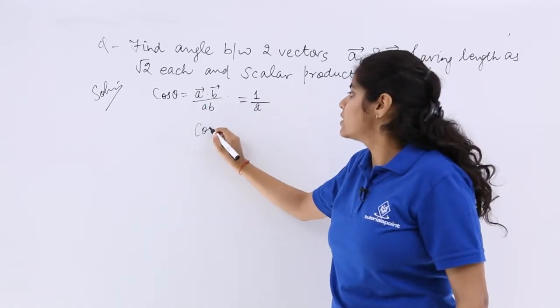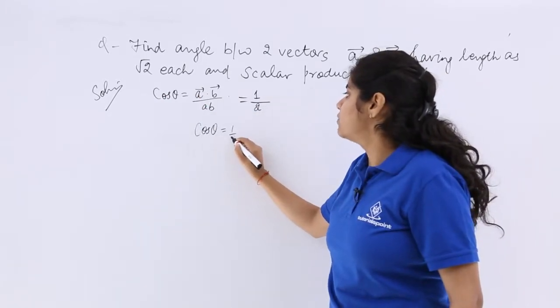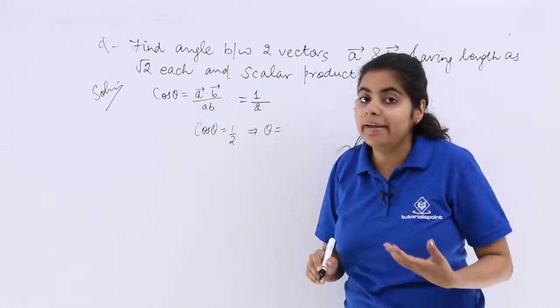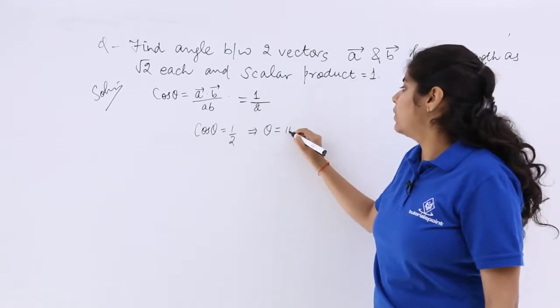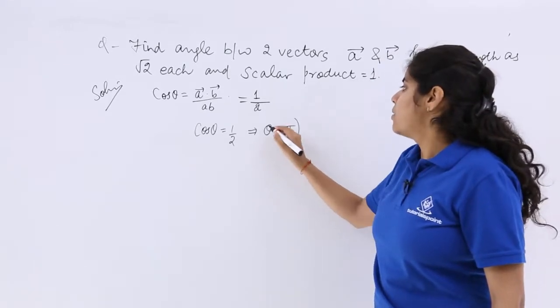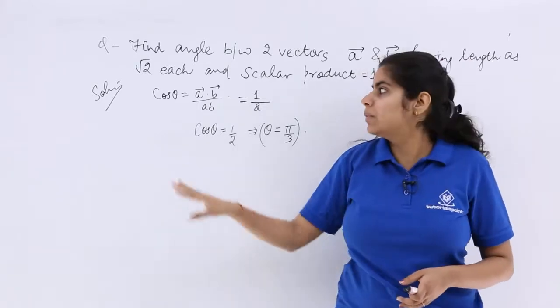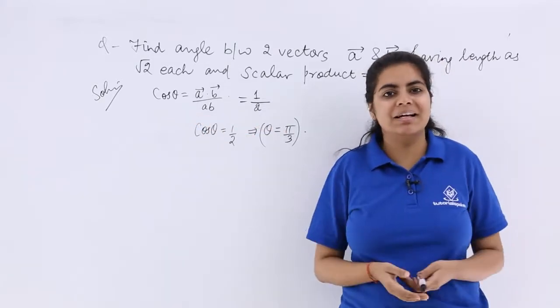So what is cos θ? So cos θ is 1 by 2. That means your θ is which angle? So cos 60 degree is 1 by 2. So θ is π by 3. So that is the answer. You have to just remember this formula and then things are clear.